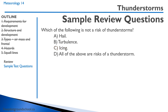Question: Which of the following is not a risk of thunderstorms? A) hail — that is a risk. B) turbulence — definitely a risk. C) icing — you can get a lot of icing in thunderstorms. D) all of the above are risks of thunderstorms. The correct answer is D.